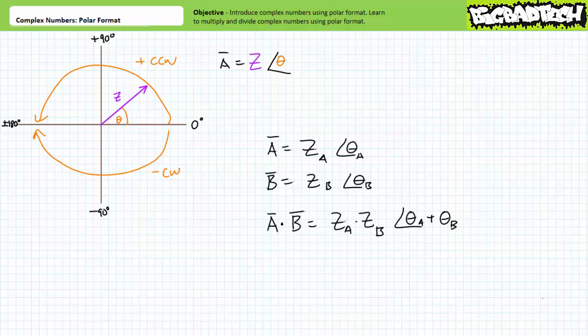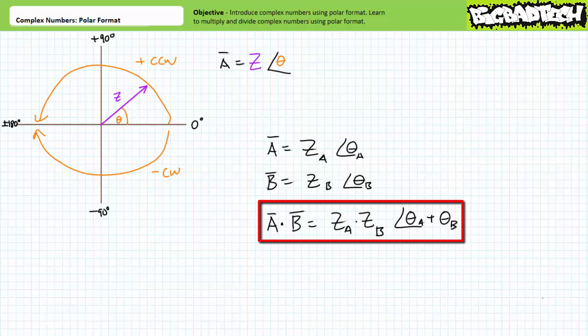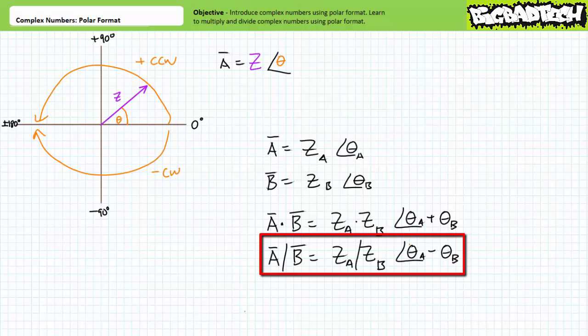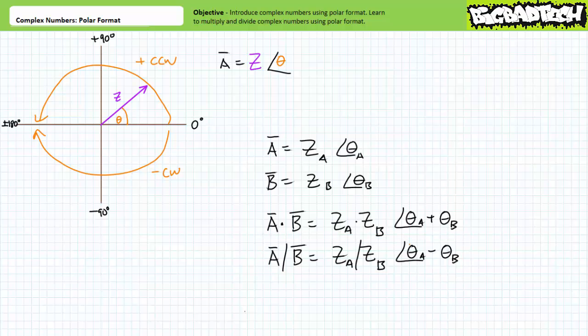To multiply a pair of complex numbers expressed using polar format, one multiplies the magnitudes and then adds the angles. To divide a pair of complex numbers expressed using polar format, one divides the magnitudes and subtracts the angles. Too easy.